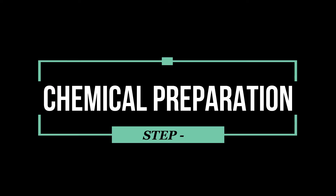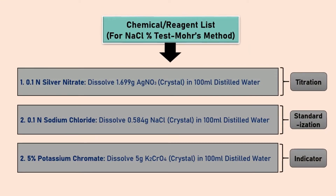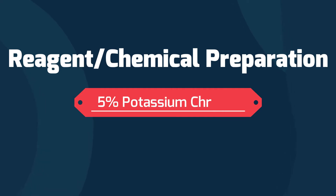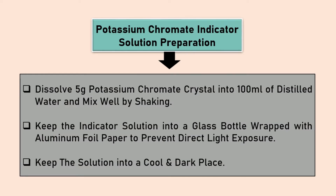Chemical and reagent preparation is very crucial for any test, so we must prepare the chemicals or reagents properly. Before going for the main test, we will prepare 0.1 normal silver nitrate, 0.1 normal sodium chloride, and 5% potassium chromate. 5% potassium chromate can be prepared by dissolving 5 grams potassium chromate into 100 milliliters distilled water and shaking to mix well. Keep the solution bottle wrapped with aluminum foil paper to avoid direct light exposure and store it in a dark and cool place.